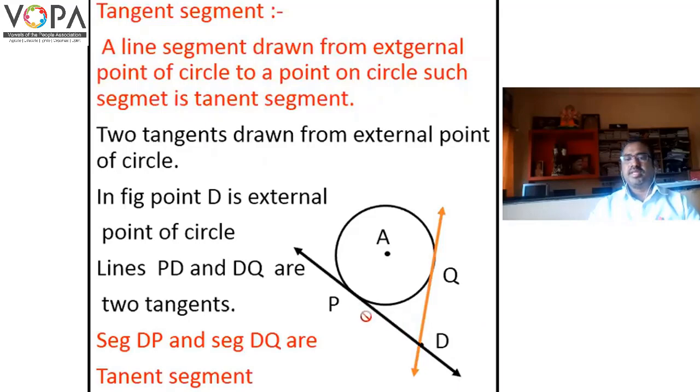From external point D to point of contact P, segment DP is a tangent segment. From external point D to point of contact Q, segment DQ is a tangent segment.